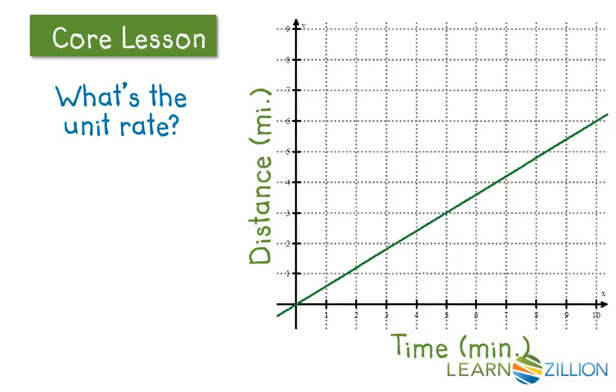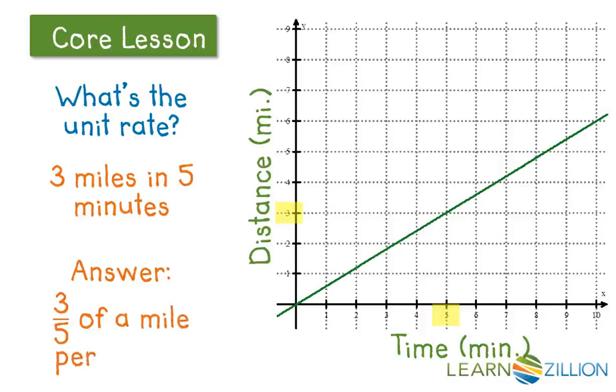Fortunately we know a few other ways to find the unit rate. One way is to pick any ordered pair on the graph such as this one and look at its coordinates. This ordered pair tells us that in five minutes you can travel three miles. From that information we can find the unit rate by dividing, and again remember fractions are just as good in this case as decimals. So our answer is three-fifths of a mile per minute.